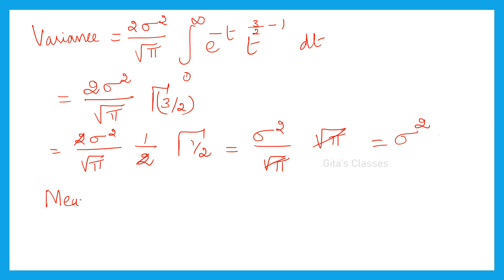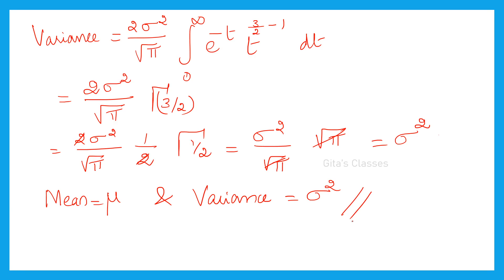Therefore, the mean of the normal distribution is mu and the variance of the normal distribution is sigma squared. This proof is also important — please go through it and we will do some problems in the next live class. Thank you so much.